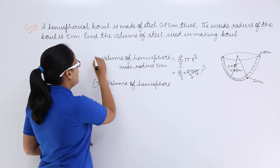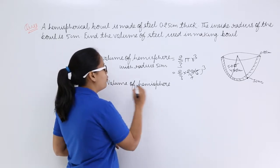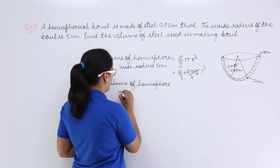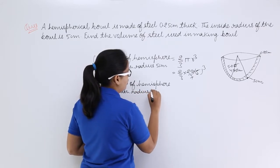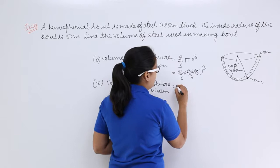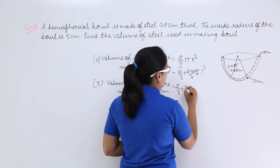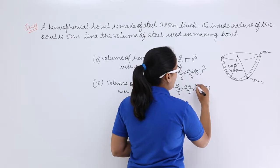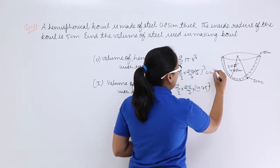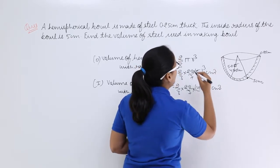This will be inside and this is for outside. Volume of hemisphere with radius 4.75 cm will be 2/3 × 22/7 × 4.75³, and the unit will be centimeter cube because all the units are in centimeters.